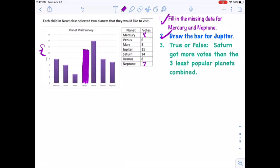True or false? Saturn got more votes than the three least popular planets combined. Well, how many votes did Saturn get? Saturn got 14 votes. It got a lot of votes. It was the most popular answer. So Saturn we know got 14 votes.